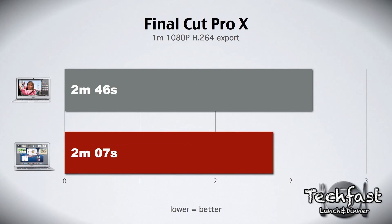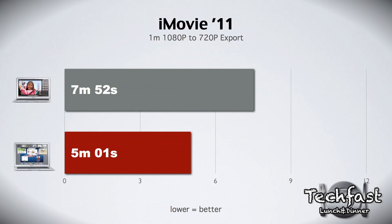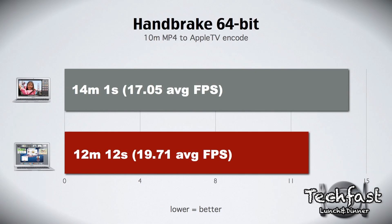Now for the benchmarks — in Final Cut Pro 10, for a 1 minute 1080p H.264 export, the 11 inch MacBook Air completed that in 2 minutes and 46 seconds, while the 13 inch MacBook Air was faster at 2 minutes and 7 seconds. For iMovie 11, converting a 1 minute 1080p clip to 720p H.264, the 11 inch took 7 minutes and 52 seconds whereas the 13 inch did it in 5 minutes and 1 second.